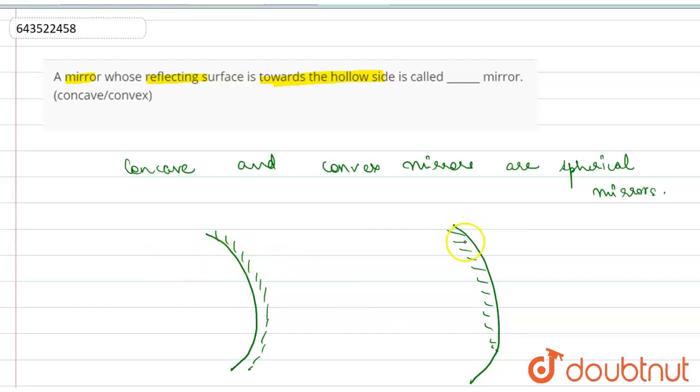And one whose outer side is the reflecting side. So this is called the concave mirror, and this is the convex mirror. So the correct answer to this is concave mirror. Hope you understood this question.